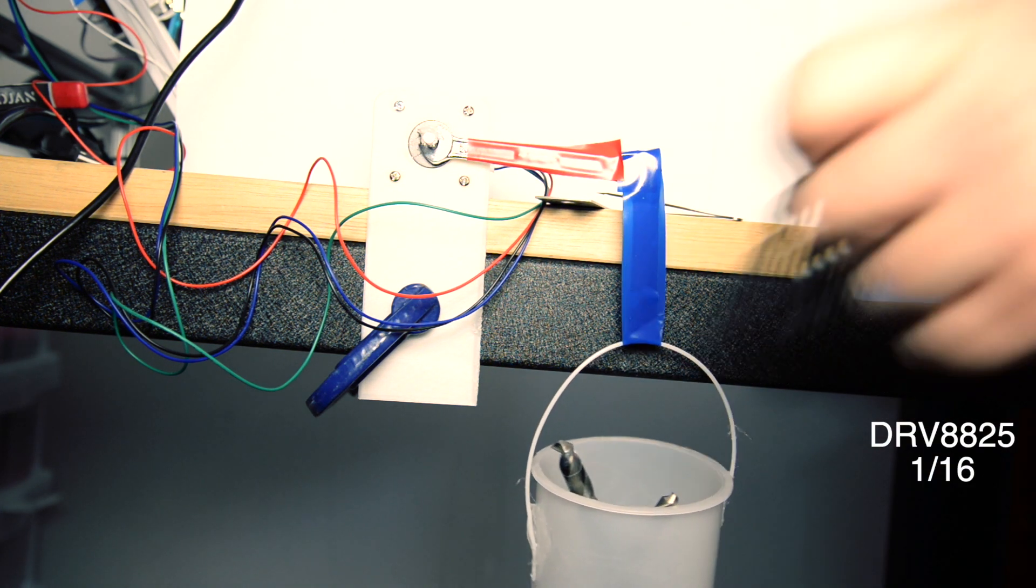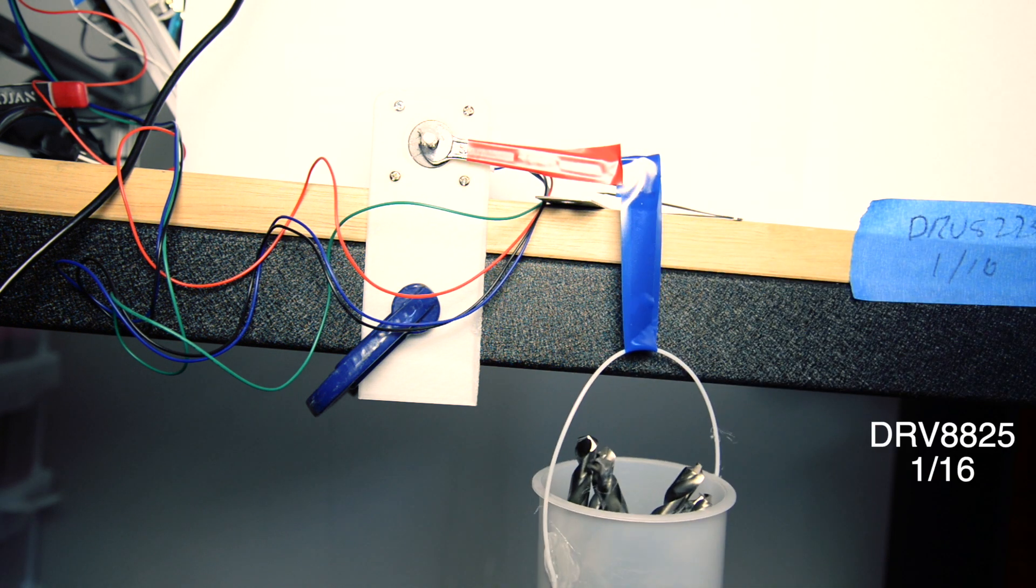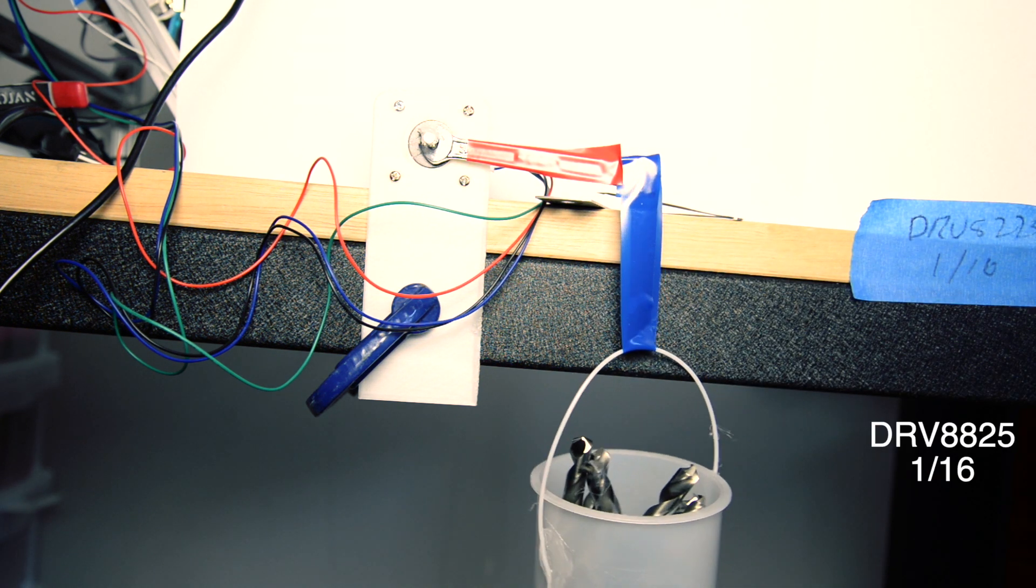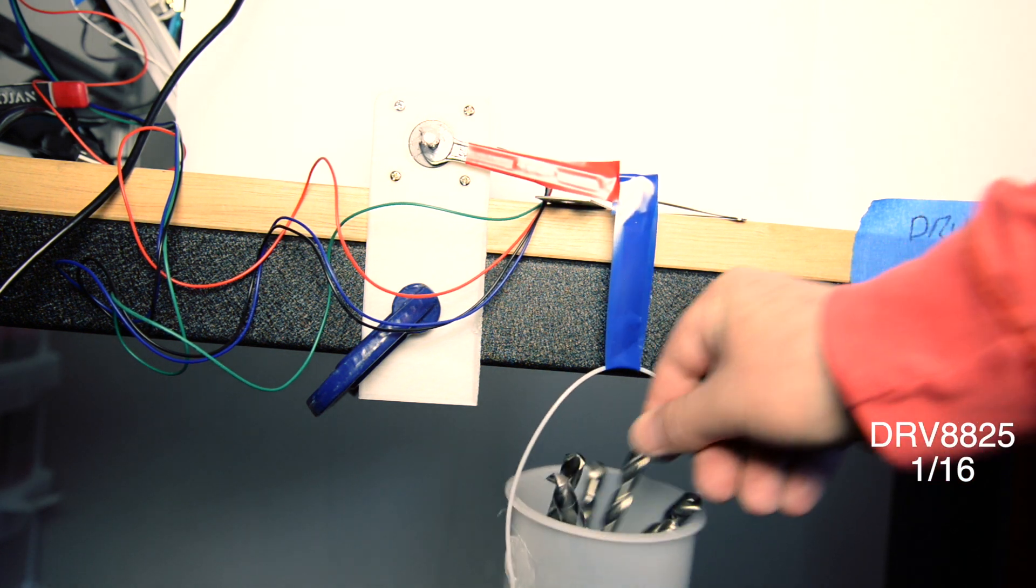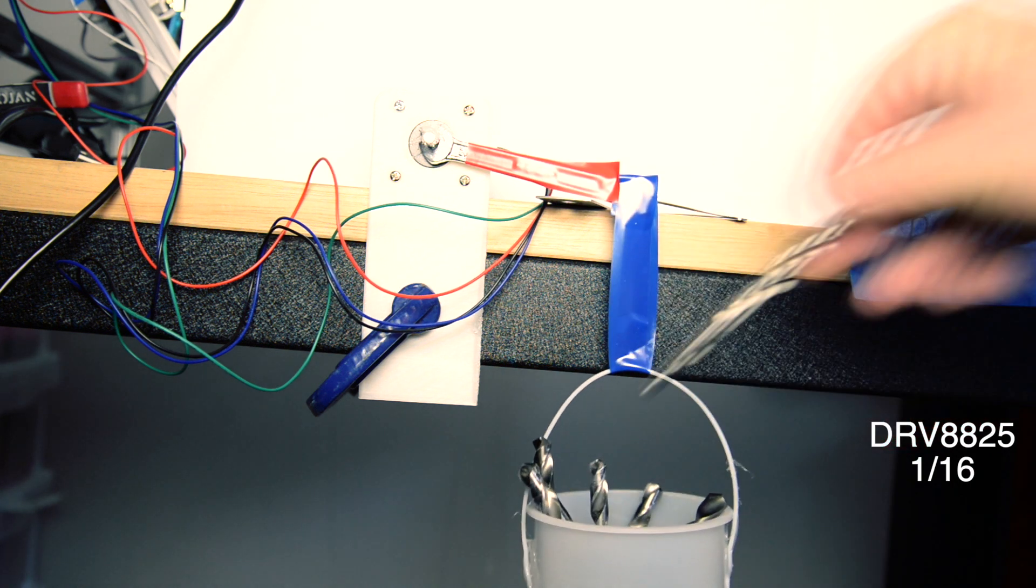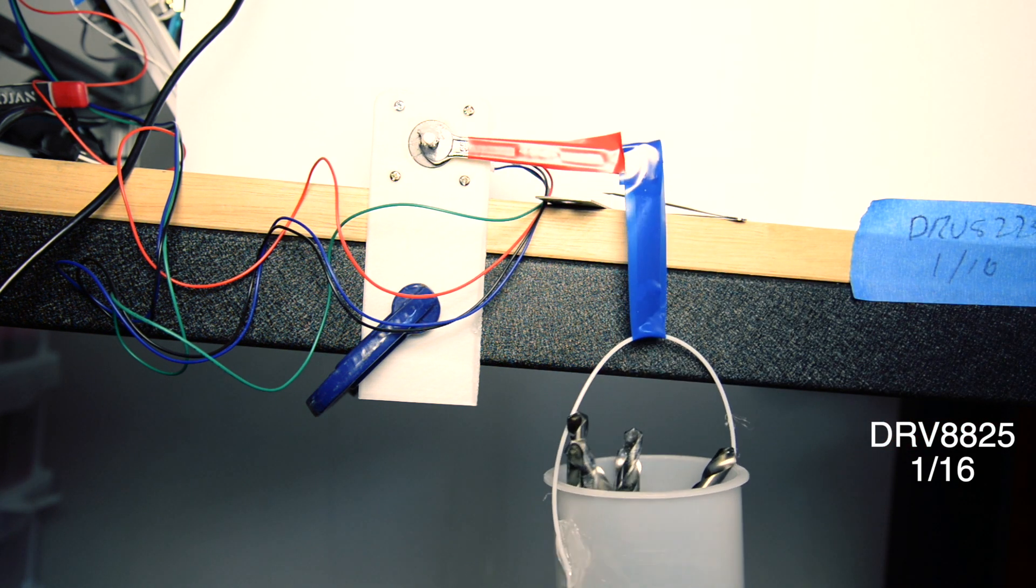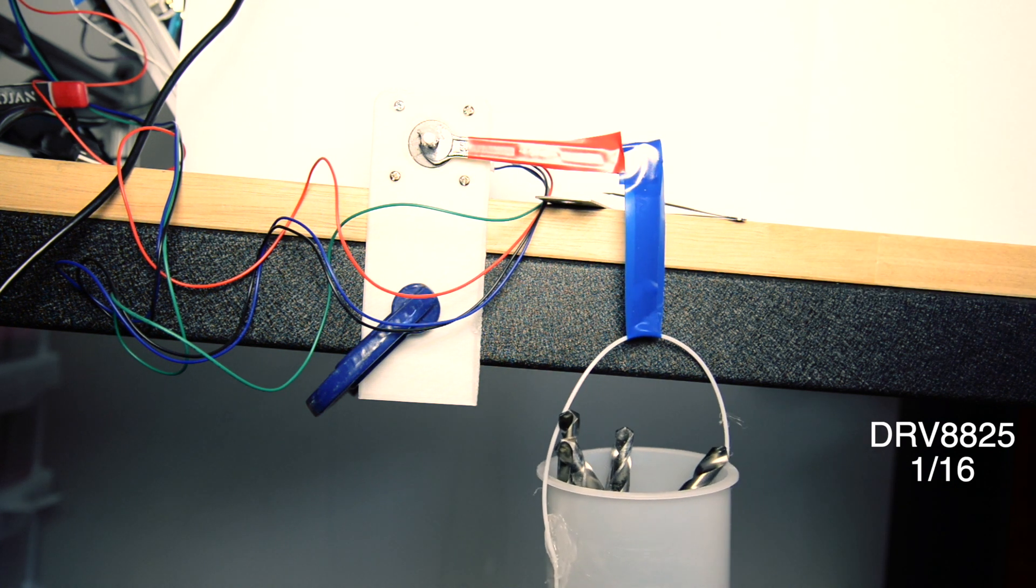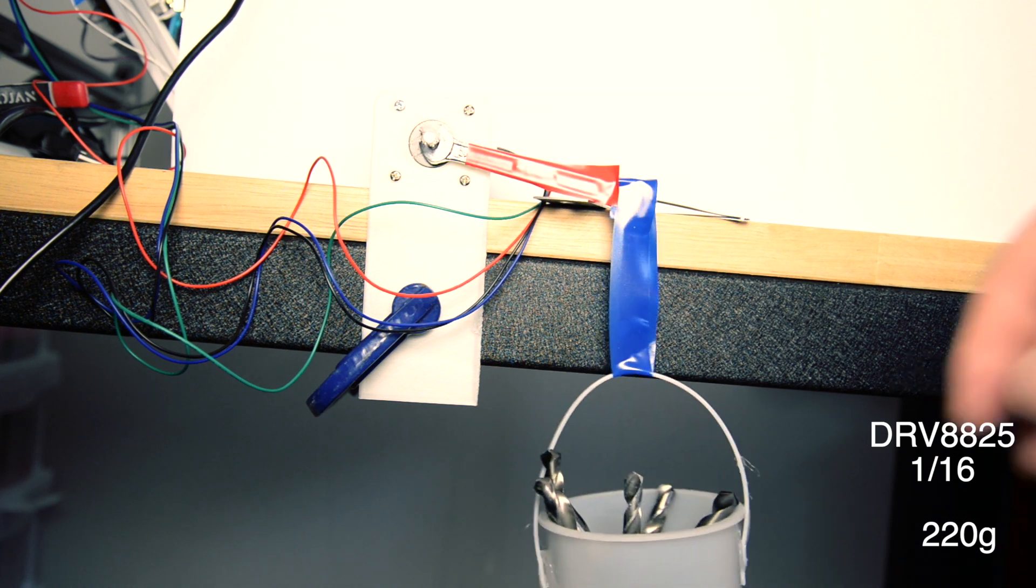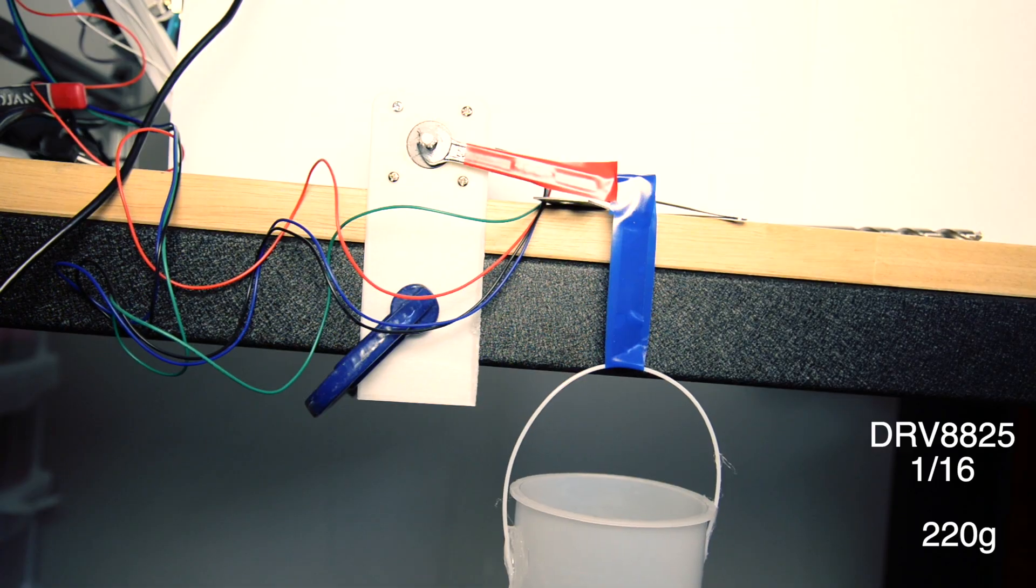In this bit of footage you can see that it's usually the holding torque of the motor. So I'm loading more and more in and when I try and move it drops down. This shows nicely that the moving torque is lower than the holding torque. So again on the DRV8825 with 1/16th microstepping we get 220 grams which is almost exactly the same as 32 microsteps.